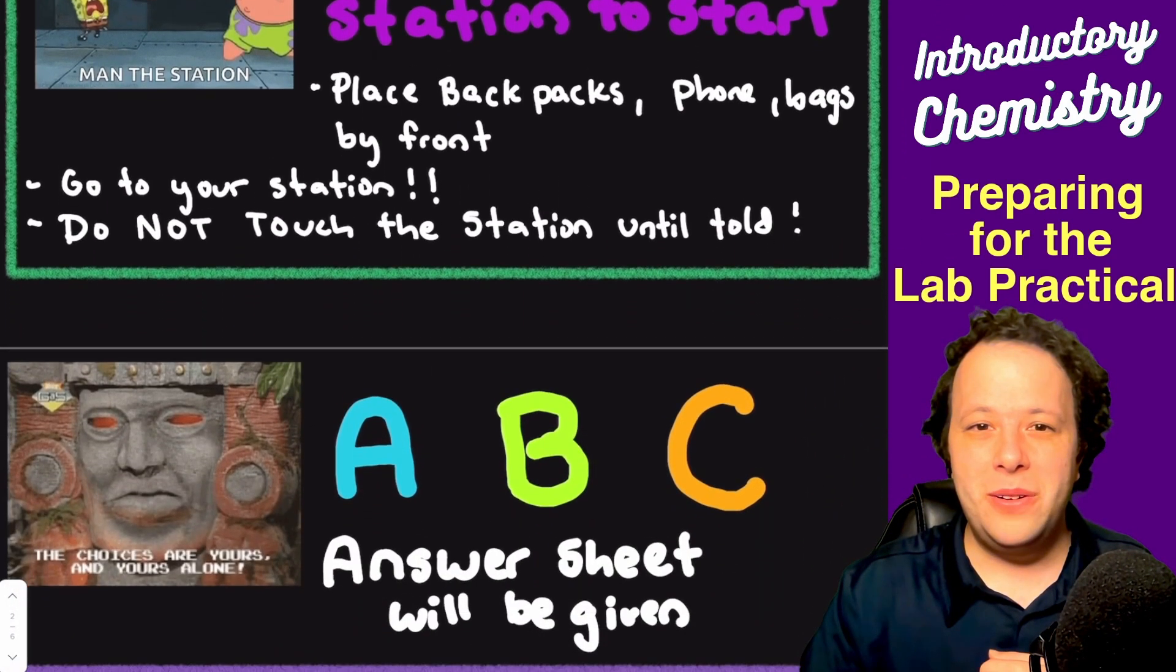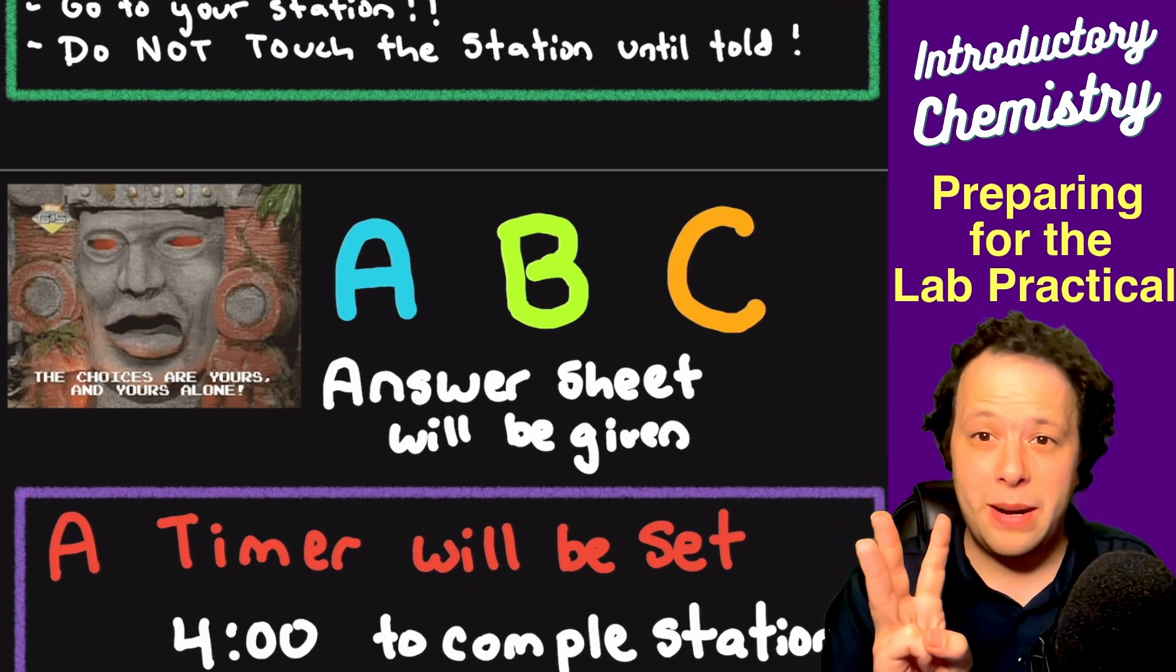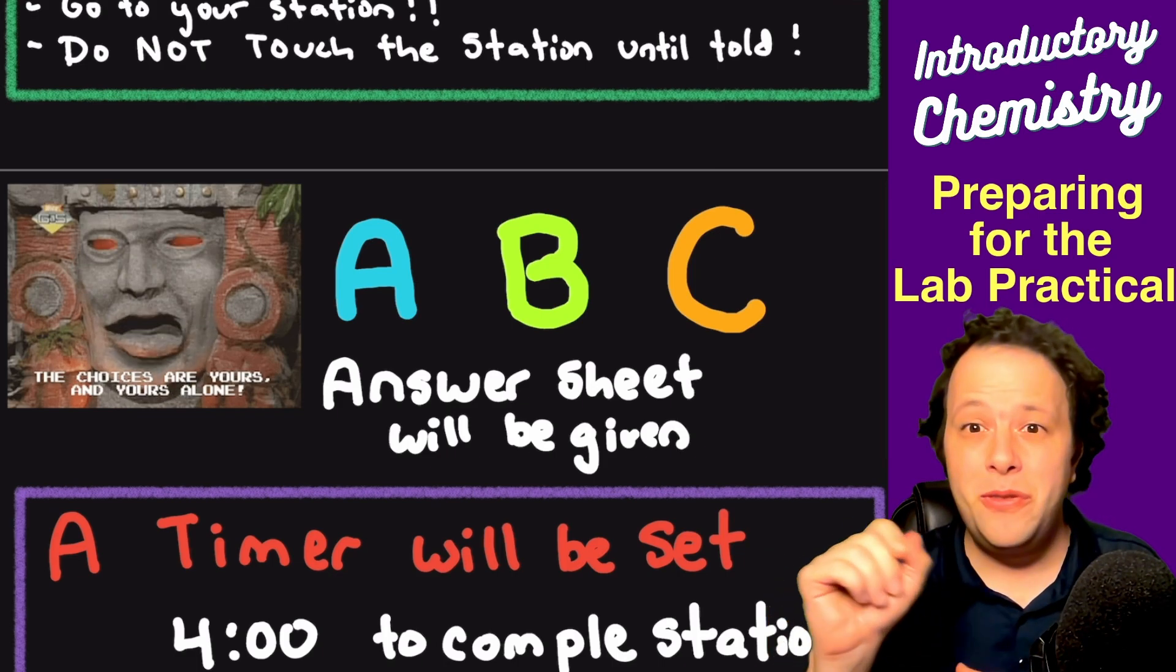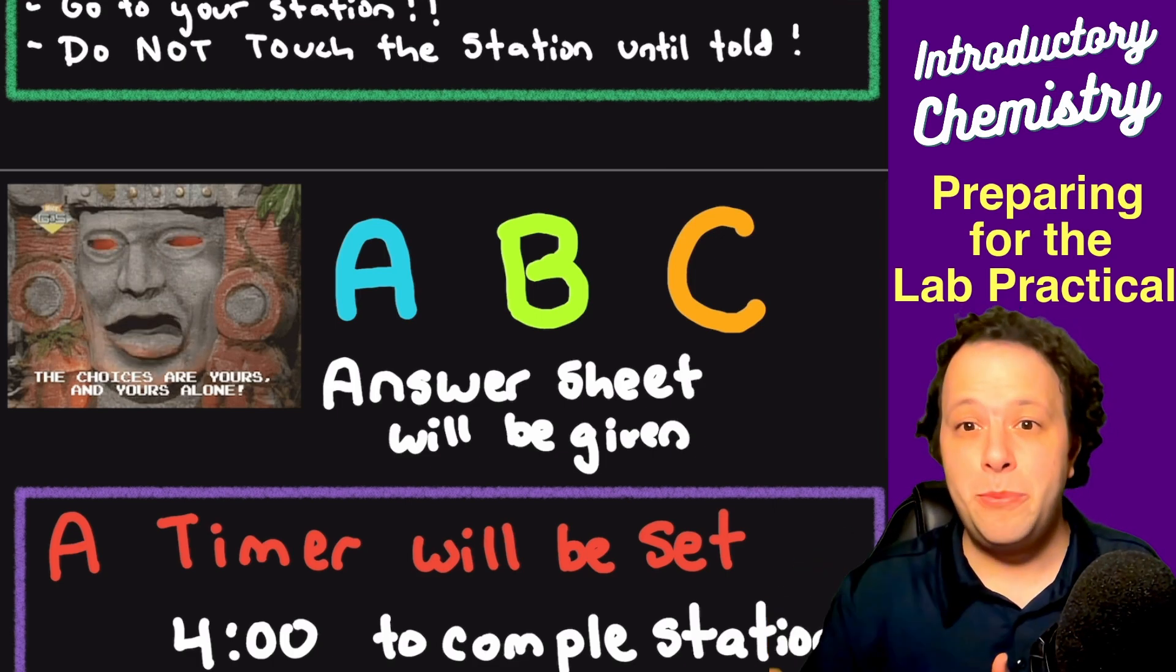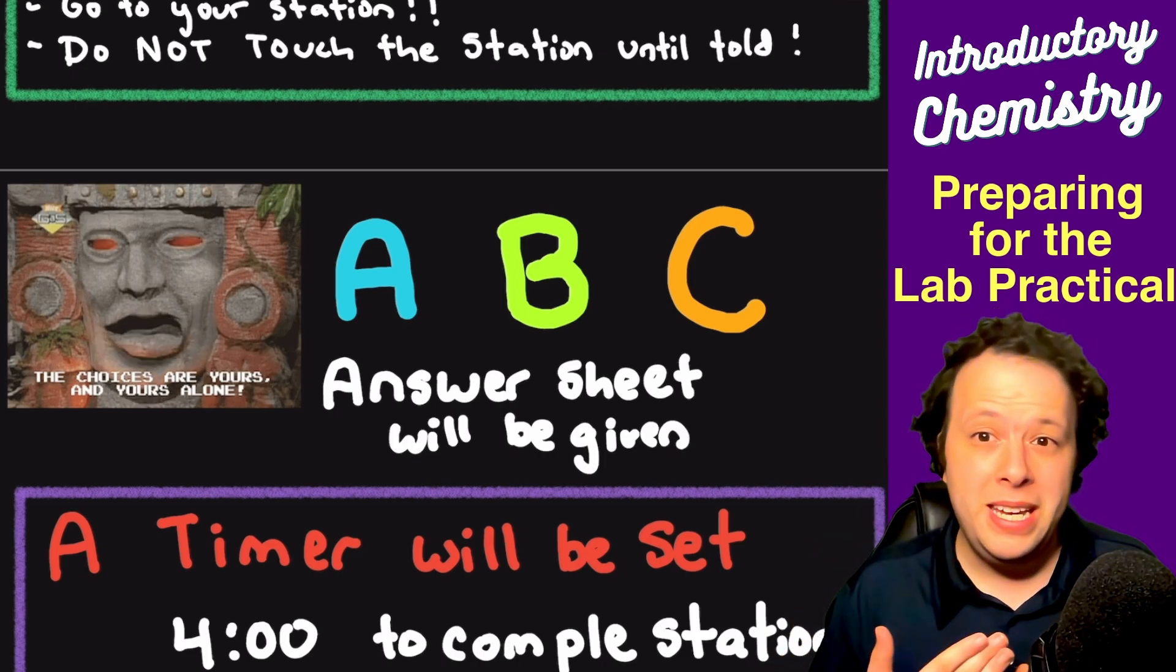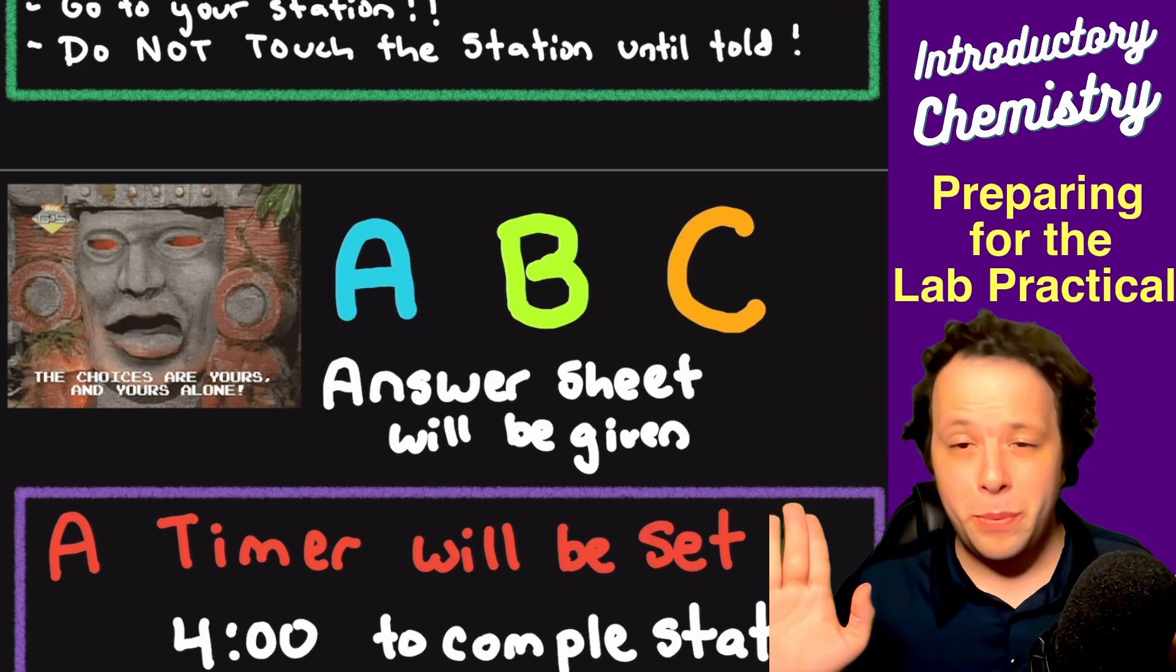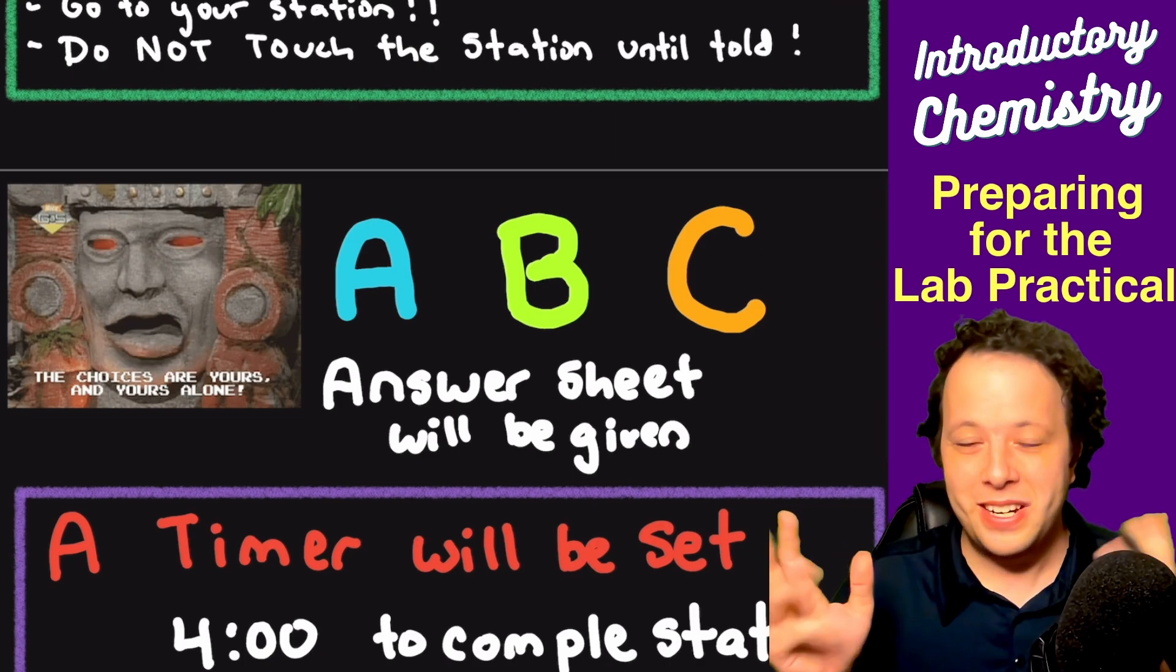From there, it depends on when they hand out the versions. There are three different lab practical versions. You might get the version when you walk in, or instructors may hand out a different color-coded answer sheet for you to fill out all your answers on. You can get A, B, or C—they are different colors. Every time you're at a station, you're going to be answering the question for your version. Ignore the other versions—everybody's going to have their own test.